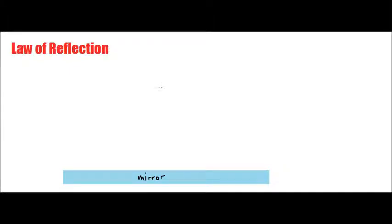When dealing with mirrors, it's important to be able to understand the law of reflection. What happens is we need to understand that a ray of light is making its way towards a mirror. To help with this, we're going to draw a perpendicular line to the mirror — this is what we refer to as the normal.